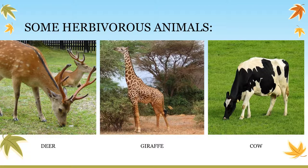Deer, giraffes, and cow — these are some examples of herbivore animals. Deer eat grass, leaves of plants and trees, and sometimes fruits. Giraffes mostly eat leaves on the top of branches of trees. Cows, as all of you know, eat grass. These are examples of herbivore animals.